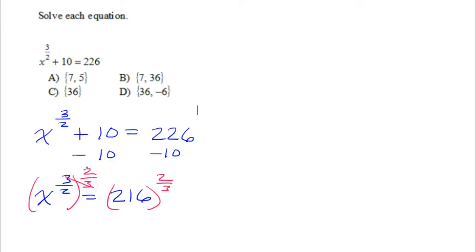Now, this will cancel out because it makes 1. And that leaves us with x equals 216 to the 2 3rds power.